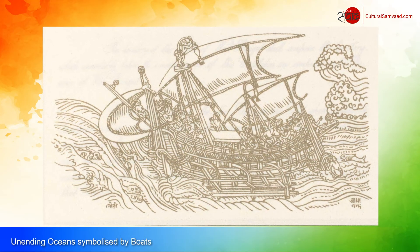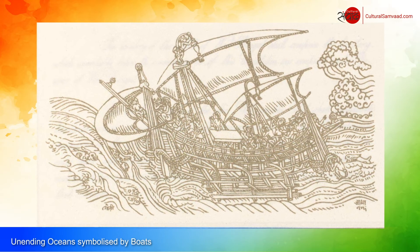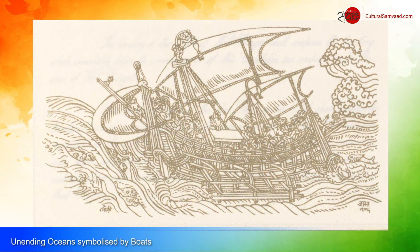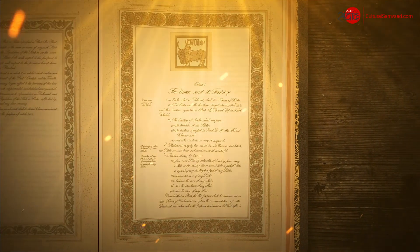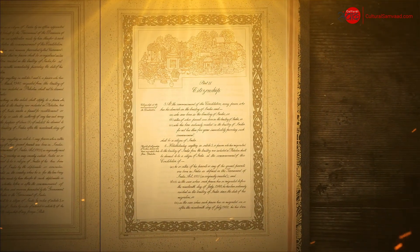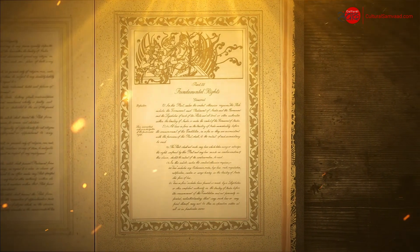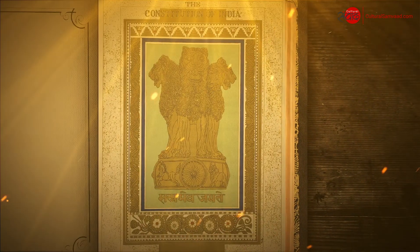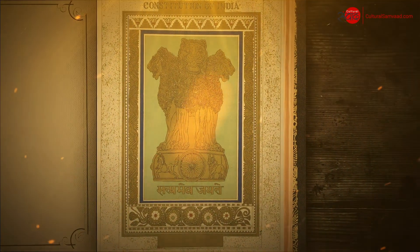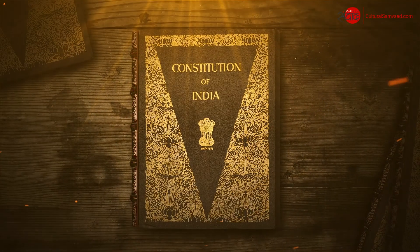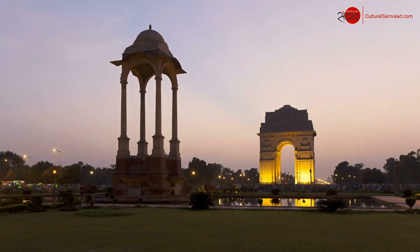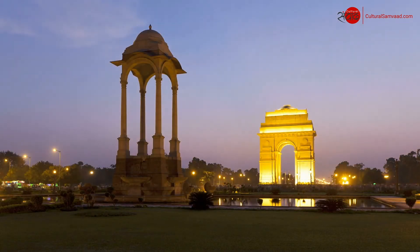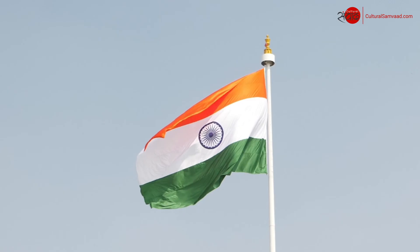The boats also symbolize the eternal quest of we the people to sail beyond the limitations of the ordinary. The 22 pieces of art that embellish our Constitution are by very definition not exhaustive in nature, but when woven together in this document of unparalleled importance, they bring to life a captivating portrait of the diverse culture and timeless civilization of India that is Bharat. Jai Hind!